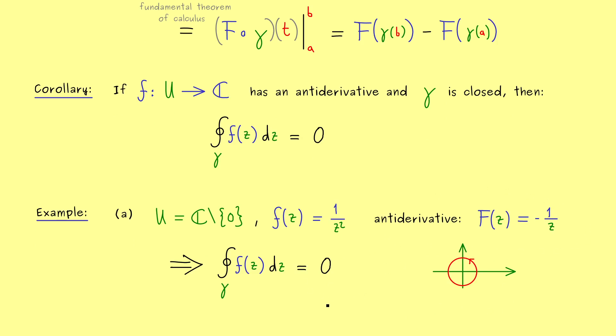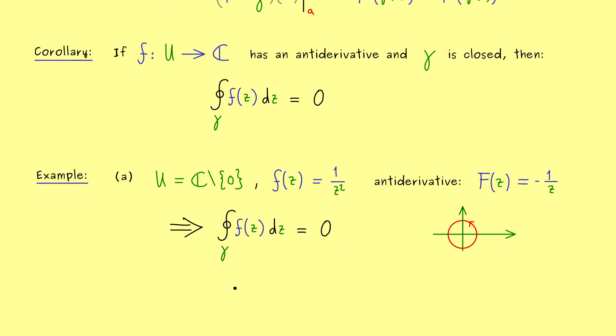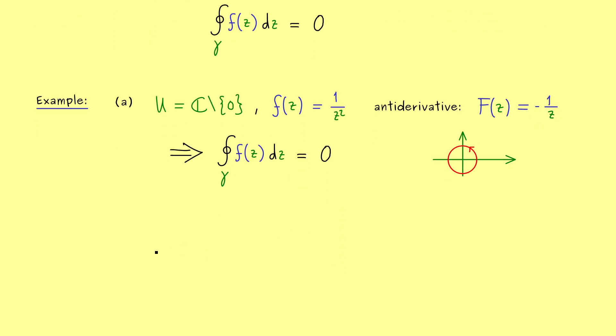However at this point maybe you remember the important example we had in the last video. There we can consider the same domain but now with the function 1 over z. Indeed in the last video we have calculated what happens when we take the curve as a circle around the origin.